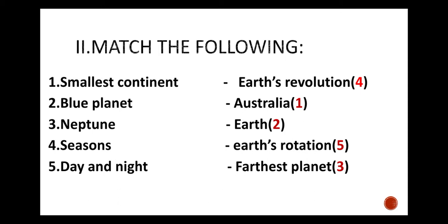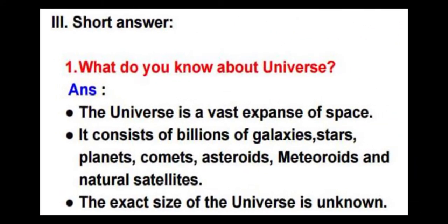The third exercise: short answers. The first question is what do you know about universe? The answer is the universe is a vast expanse of space. It consists of billions of galaxies, stars, planets, comets, asteroids, meteoroids and natural satellites. The exact size of universe is unknown.